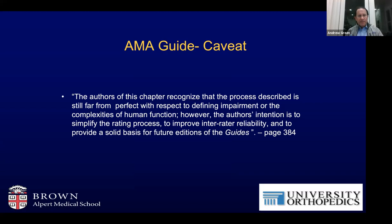The guides are not perfect. The authors of the most recent edition acknowledged that the process is still far from perfect with respect to defining impairment or the complexities of human function. However, their intention is to simplify the process, improve interrater reliability, and provide a solid basis for future editions. It's been interesting over my career to see some of the changes made, particularly for the evaluation of impairment of the shoulder and upper extremity.